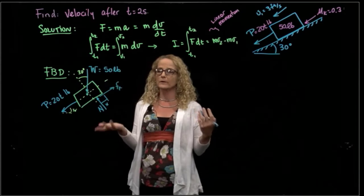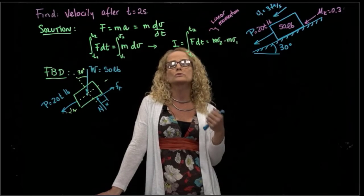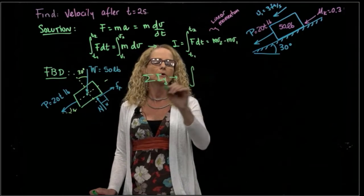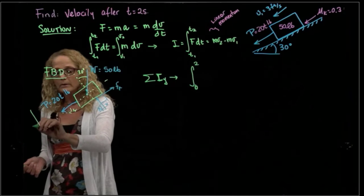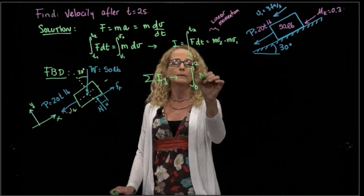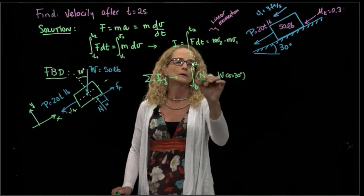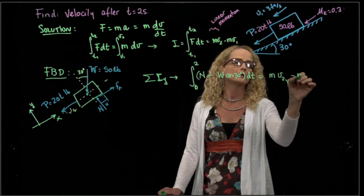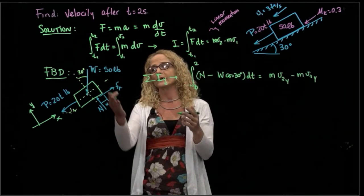Okay, so that's my free body diagram, and I am not going to do a kinetic diagram because I am applying this new approach that is the linear momentum approach. So we add linear impulses in Y. That will be the integral from 0 to 2 of the forces in Y. Naming Y, I'm going to have an inclined system. So this is my Y direction.